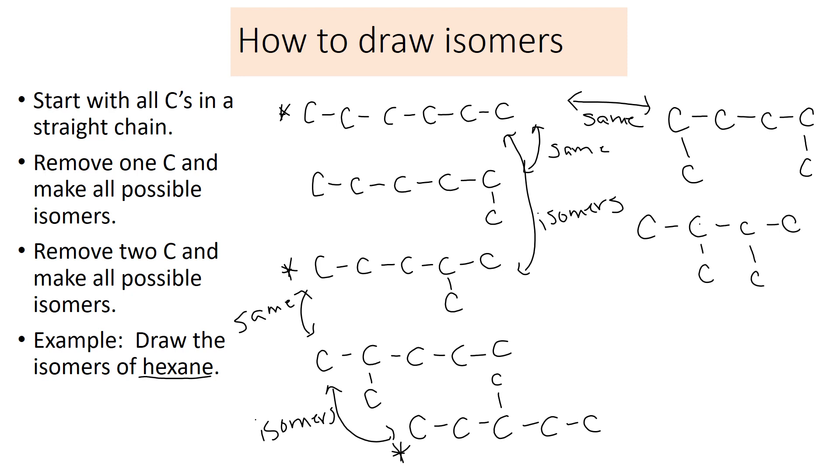But what if I put them on the middle carbons? Is that different or have I drawn that before? That one is unique. This one is an isomer, another possible isomer. So we have four.